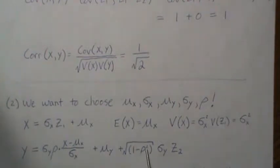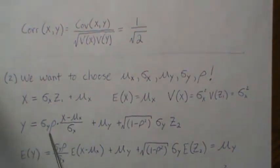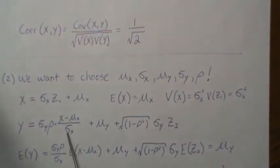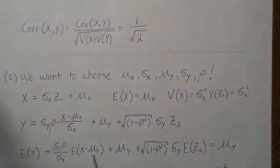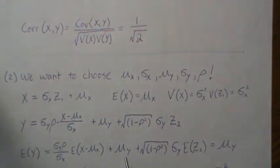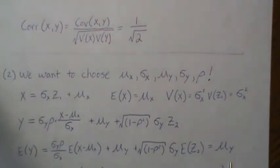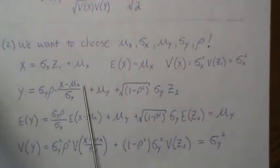Looking at the mean of y: taking the expectation, constants pull out front. The expected value of x is μx, so (x − μx)/σx goes to zero. The constant μy stays. The expected value of z2 is zero so that term goes away, and we're left with μy — the mean we want.